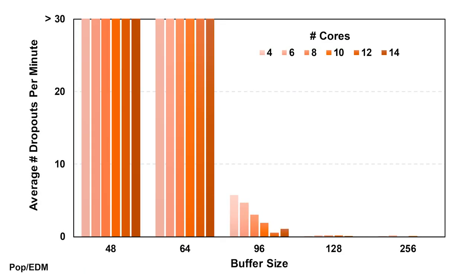For the pop/EDM track the results look significantly different. At both the 48 and 64 buffer sizes, the number of dropouts per minute were so large that you wouldn't run the project at those settings. By 96 the situation did improve a little; at 4, 6, or 8 cores the project was pretty much unusable, but you could kind of get by at 12 or 14 cores — still less than ideal, but in a pinch you could probably make it work. At the 128 or 256 buffer size, again, no issues whatsoever whether you're running 4 cores or 14 cores.